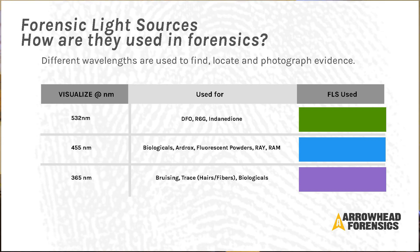In 455 blue, we're looking for biologicals, also other chemical dye stains like Ardrox, RAM, and fluorescent powders. And then 365 UV — in UV 365, we're looking for bruising, trace evidence, fibers, and some biologics. So these are the three primary things used in forensics: 532 green, 455 blue, and 365 UV.